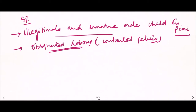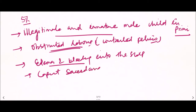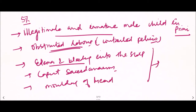Signs of prolonged labor will be present, such as edema and bleeding into the scalp, or formation of caput succedaneum. Severe molding of the head also indicates stillbirth. These findings signify prolonged or obstructed labor due to contracted pelvis.